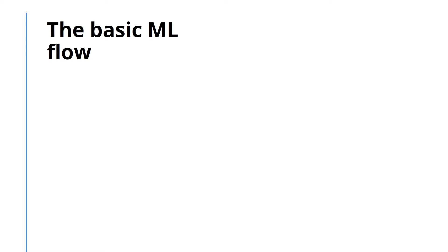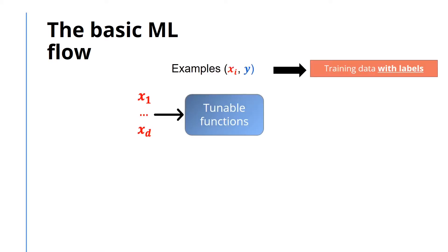In the last few videos, we discussed a general framework for supervised learning. Essentially, we wanted to find a mapping or a tunable function that fit the training data and produced an output y-hat. There are many possibilities for the specific tunable functions we may use in machine learning algorithms. So far, we have discussed a few types of tunable functions, such as linear regression models.